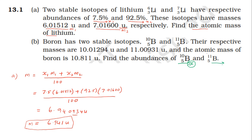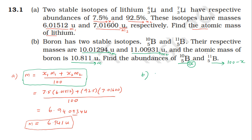Let the percentage abundance of boron-10 be X. Then the abundance of boron-11 is (100 - X). Using the effective mass formula with abundance of isotopes: atomic mass equals the sum of abundance times mass for each isotope divided by 100.